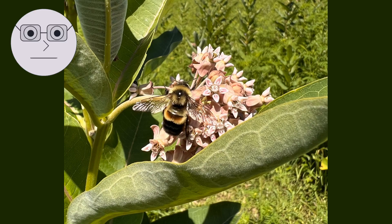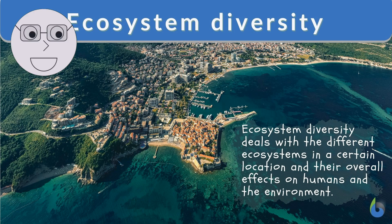Insects are found in almost every habitat on earth, from deserts to rainforests, and from freshwater streams to the depths of the ocean. A desert landscape with a beetle crawling on the sand, a rainforest with butterflies flying through the trees, and a stream with mayflies on the surface.